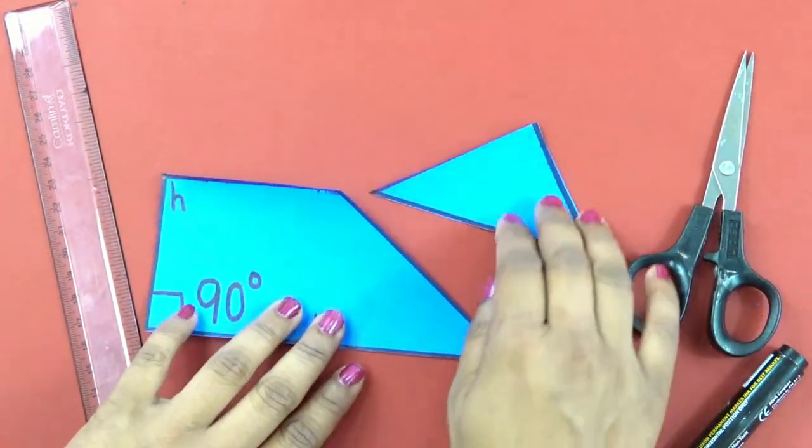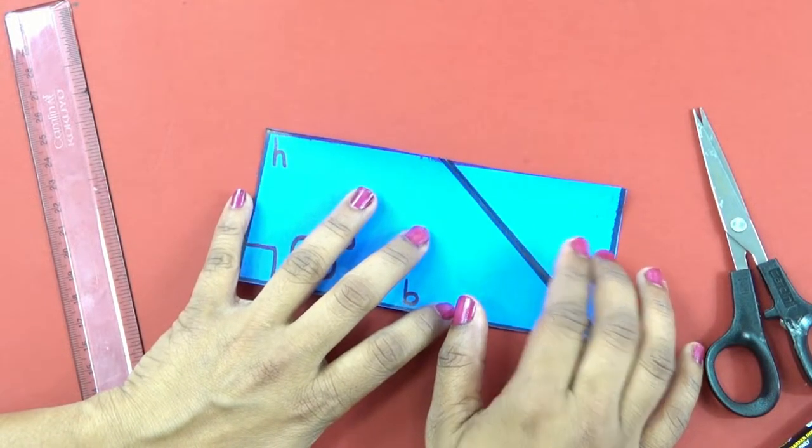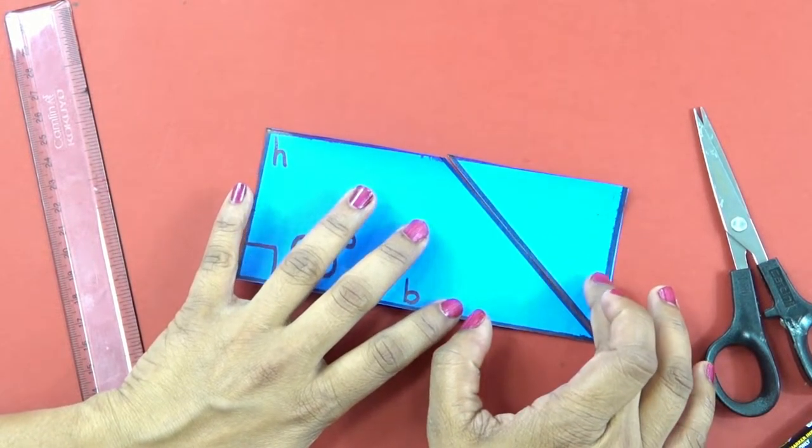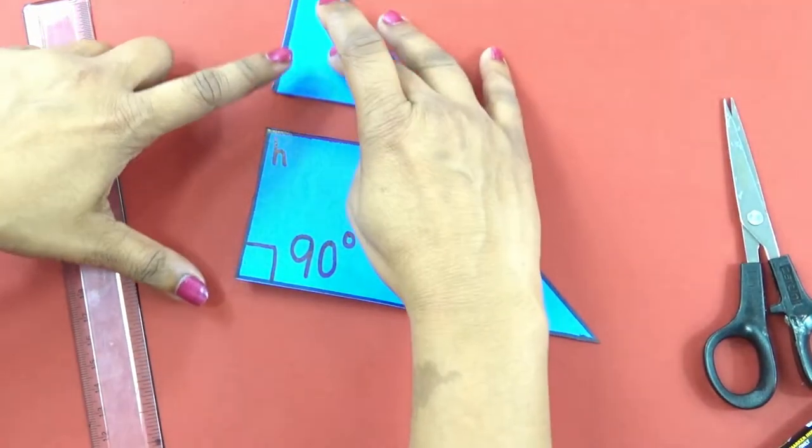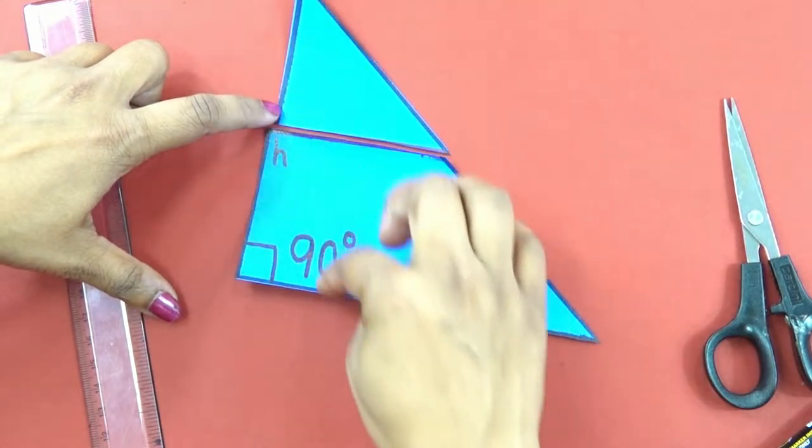Now, try to fit it so that it can become a rectangle, just see. Tada! So, this right angle triangle, when it is cut into half of its height,